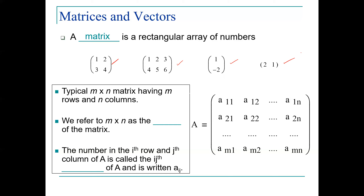A typical m × n matrix has m rows and n columns. When we describe a matrix, we use these parameters m and n. We refer to n × n as the order of the matrix. The number in the i-th row and j-th column of matrix A is called the ij element of A, written as A_ij, where i and j are indexes based on location. For example, A₁₁ has i=1, j=1, and A₂₁ has i=2, j=1.